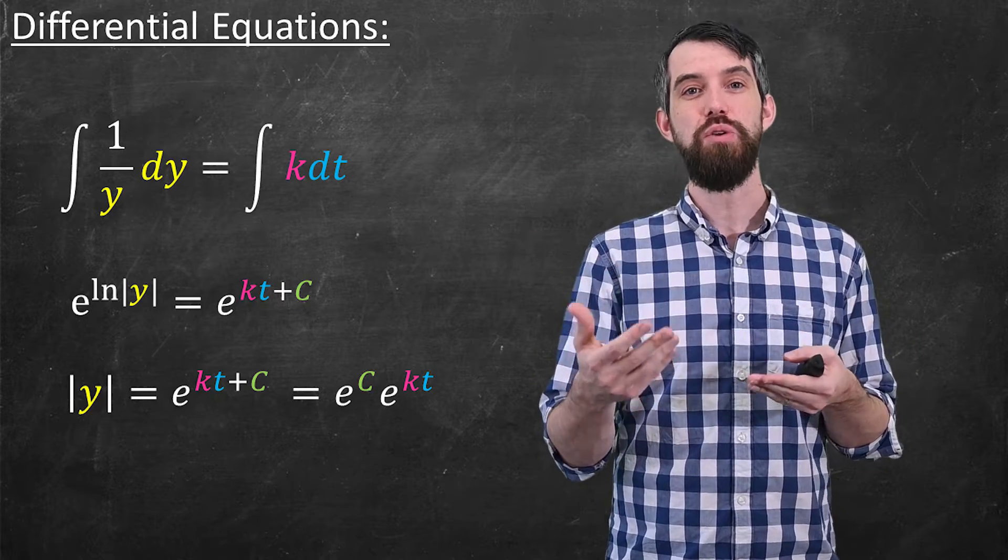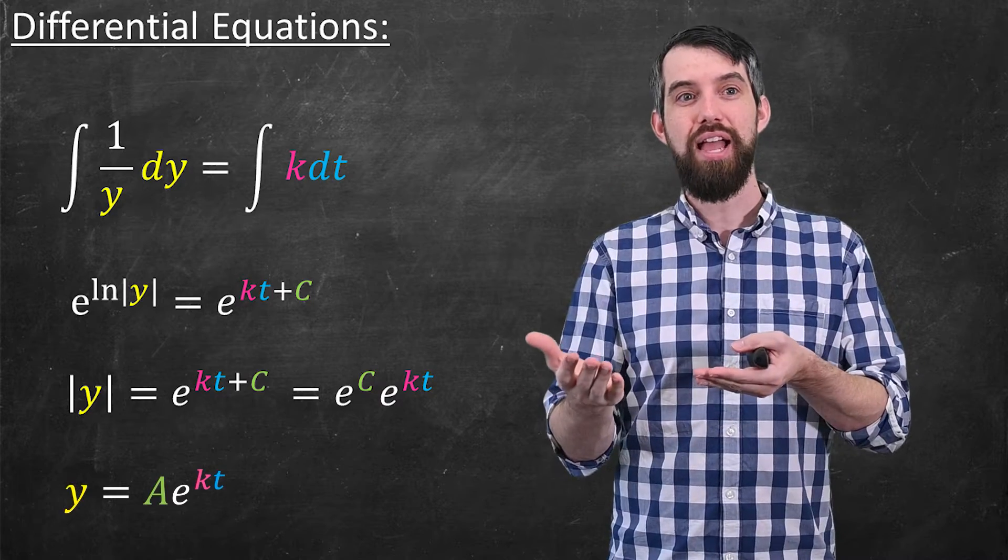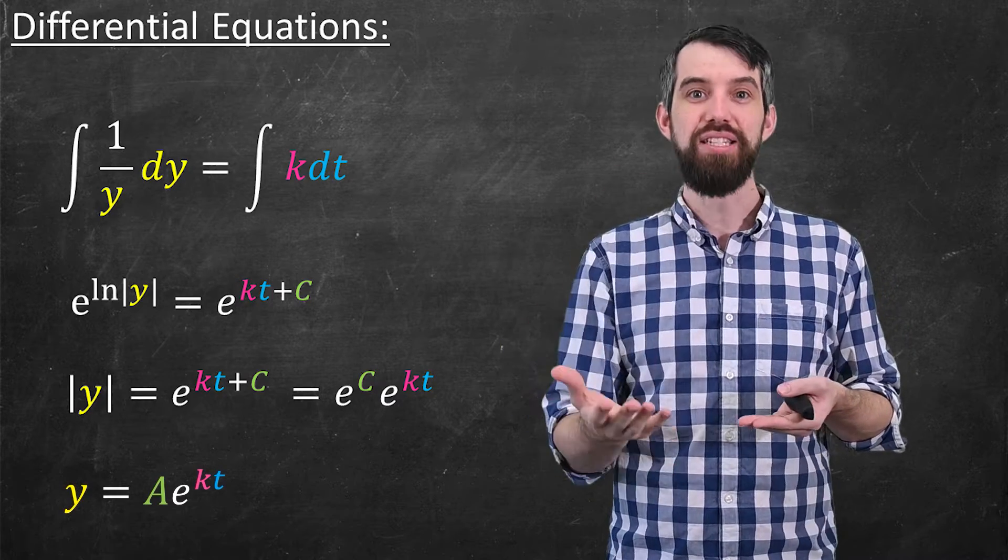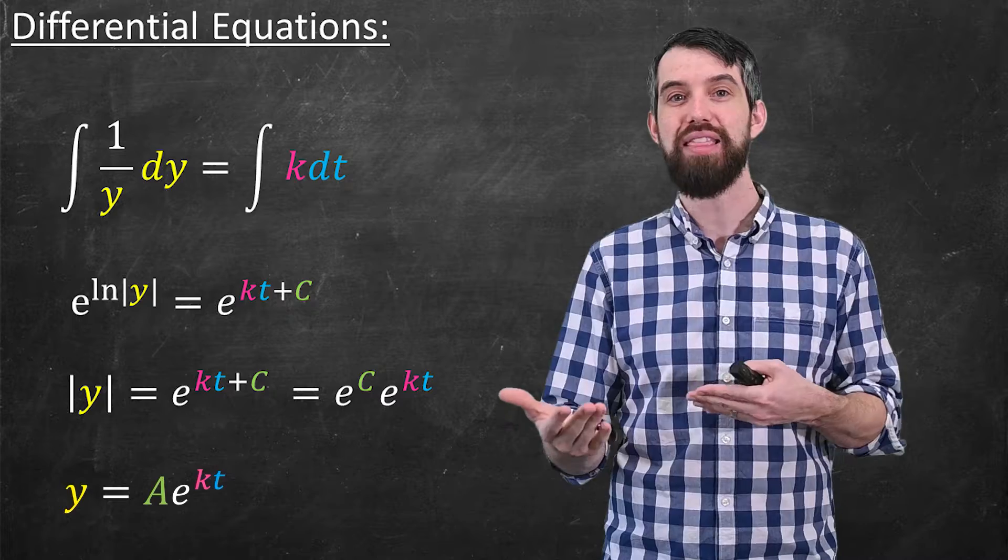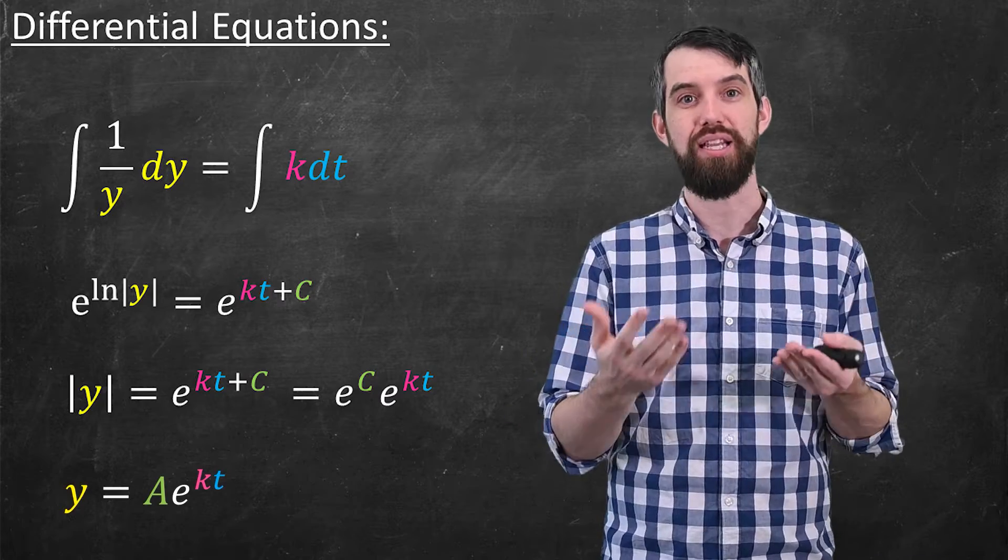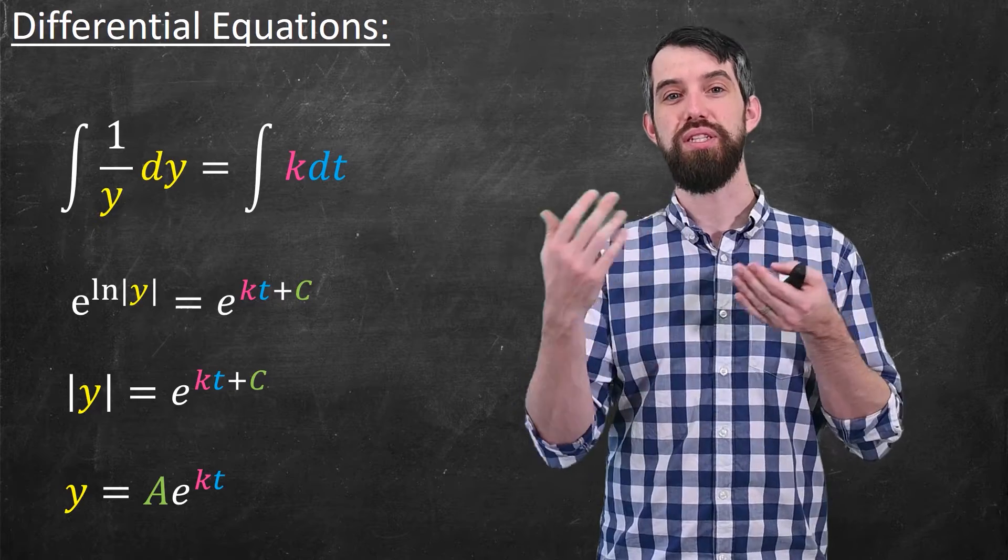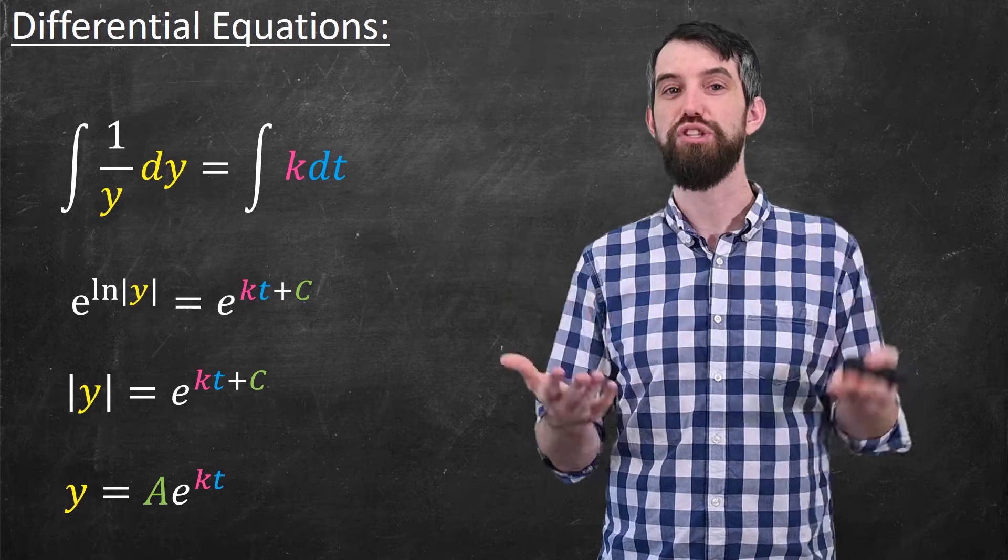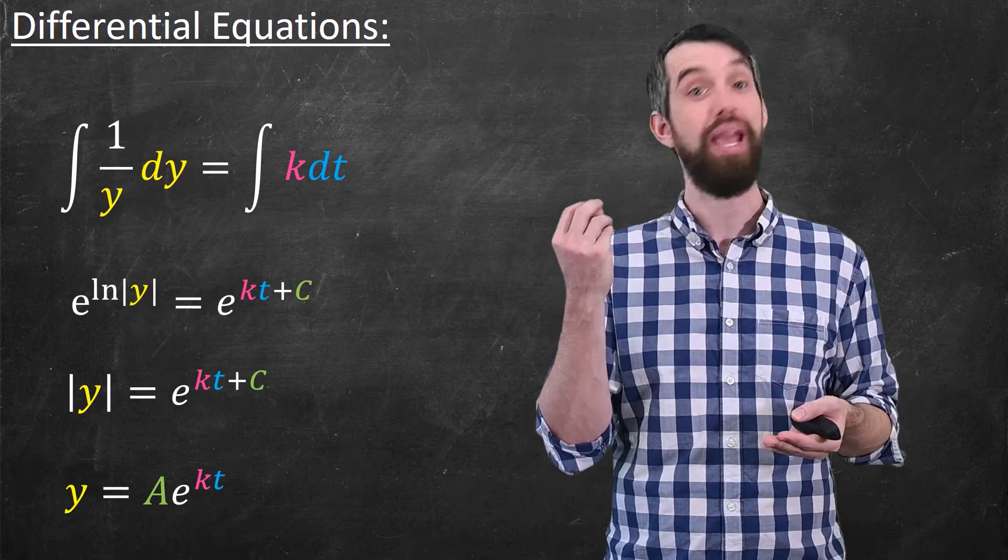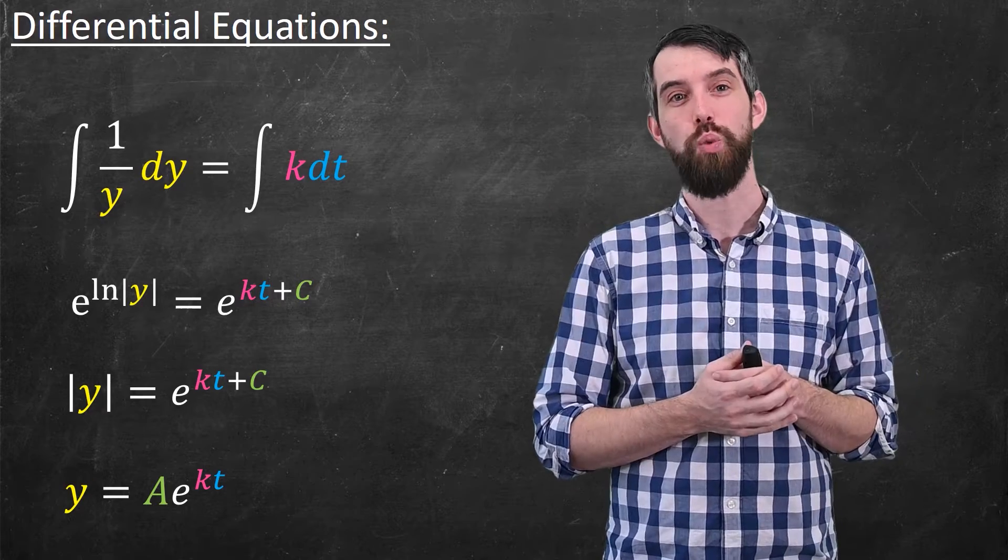And so I'm going to replace e to the c with the constant A, and if I allow A to be negative or positive, that reflects the fact that I had an absolute value, which could be plus or minus as well. And we even allow the constant A to be equal to zero, because if you went to the original differential equation and took the derivative of zero is equal to k times zero, that would have satisfied it as well.